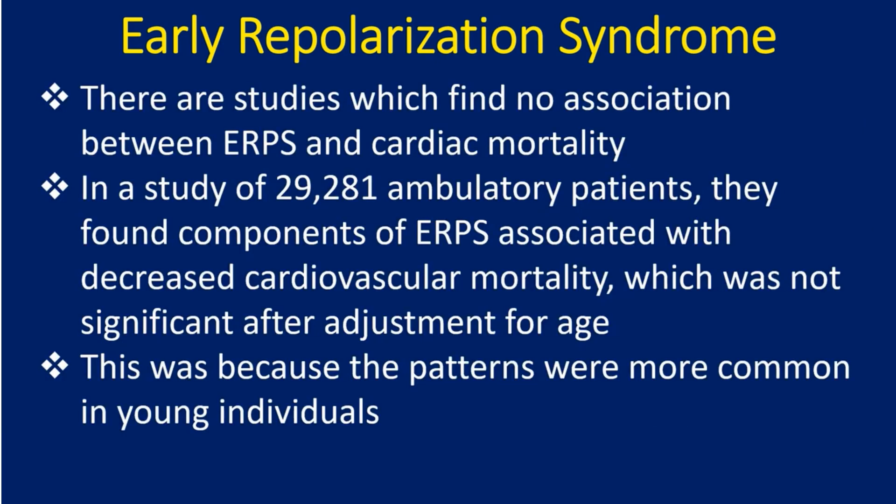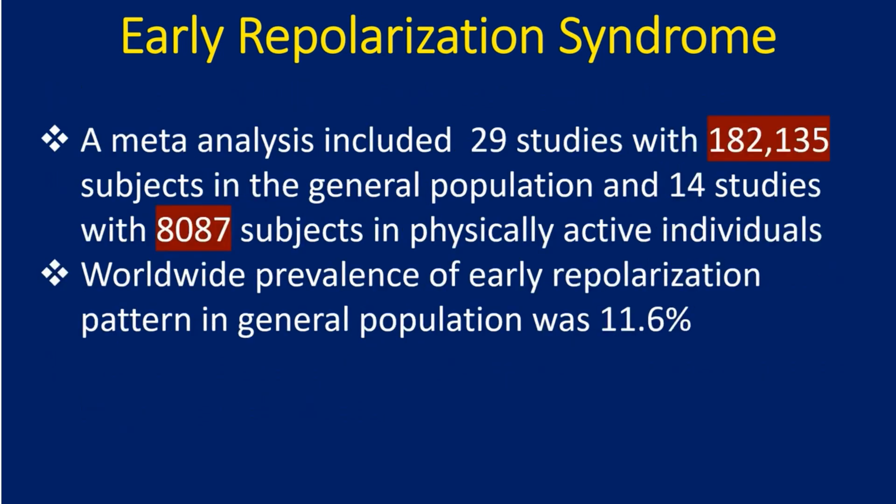There are studies which find no association between ERPS and cardiac mortality. In a study of 29,281 ambulatory patients, they found components of ERPS associated with decreased cardiovascular mortality, which was not significant after adjustment for age. This was because the patterns were more common in young individuals. A meta-analysis included 29 studies with 182,135 subjects in the general population and 14 studies with 8,087 subjects in physically active individuals.